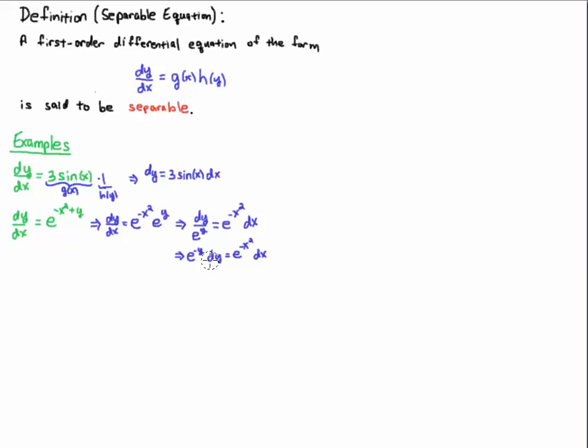So the power of it being separable is that you have everything in terms of the dependent variable on the left-hand side, everything in terms of the independent variable on the right-hand side. And then to solve this equation, you would just simply integrate.